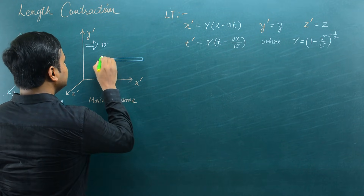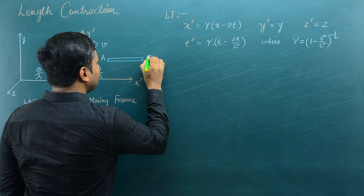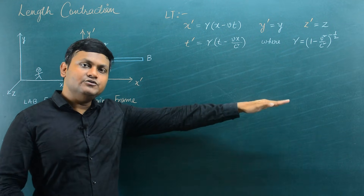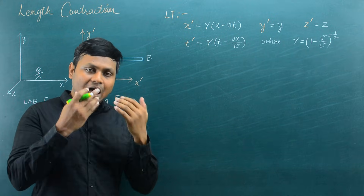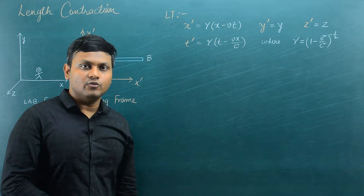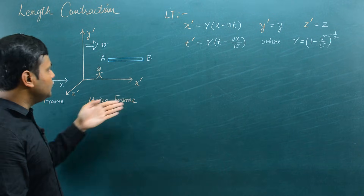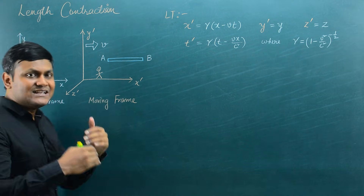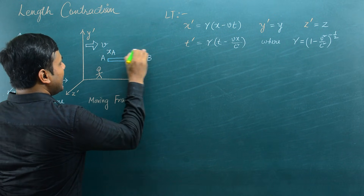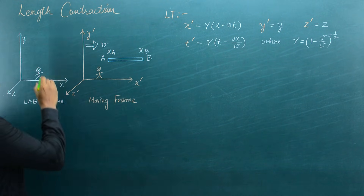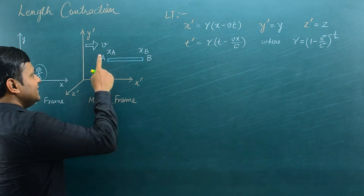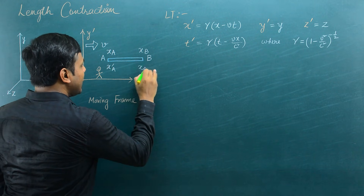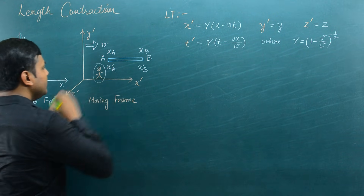Let's suppose one end of the rod is point A and the other end is point B. We are only going to measure the distances in the direction of relative motion. As it turns out, length contraction is a phenomenon that happens only along distances in the direction of relative motion — it does not happen in directions perpendicular to that of the relative motion. Relative motion here is happening in the positive x-axis. So let's suppose that A has coordinates X_A and B has coordinates X_B with respect to the observer in the lab frame, and the same rod has coordinates X_A' and X_B' with respect to the observer in the moving frame.